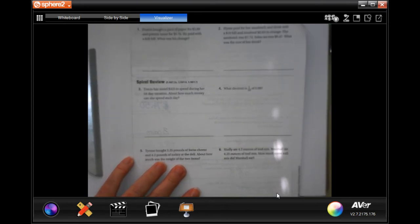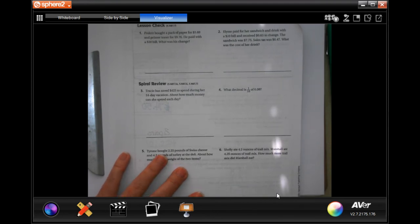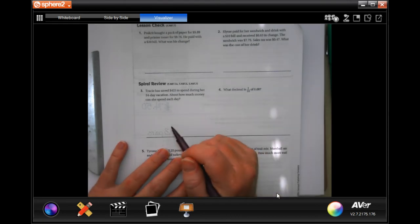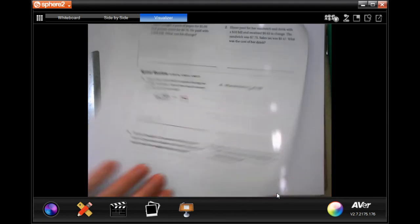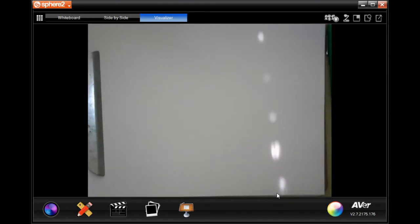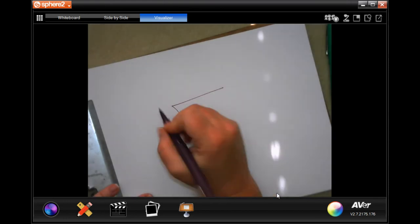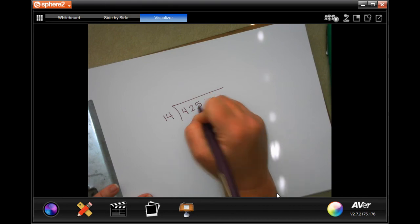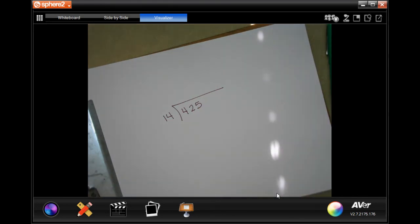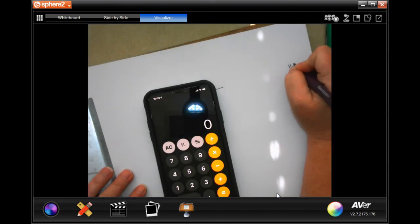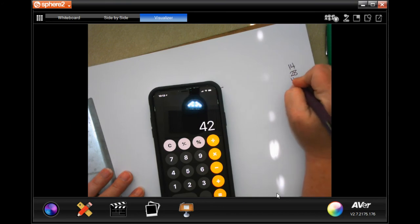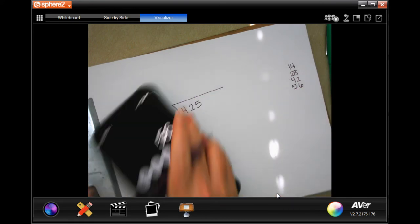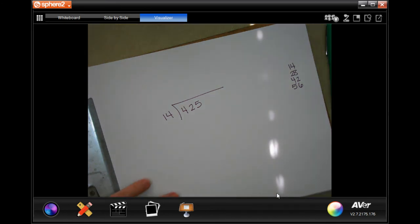Tracy has saved $425 to spend during her 14-day vacation. About how much money can she spend each day? So, once it's around, right? After we're done. So, 425 divided by 14. Well, I'm going to come over here and I'm going to write that on paper. Because I do not know my multiplications of 14. So, I'm going to, no shame in my game, write down my multiples of 14. 14, I know 28. So, 14 times 3 is 42. 14 times 4 is 56. So, hopefully we don't actually have to go any further than that. So, I'm going to leave it at this.